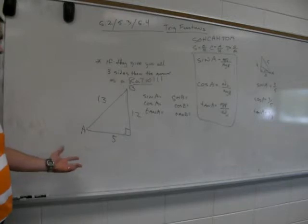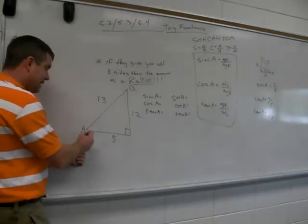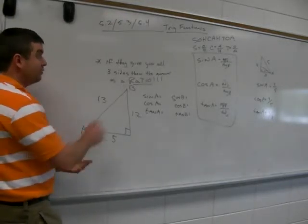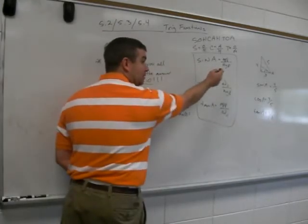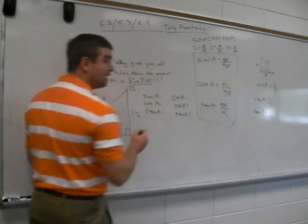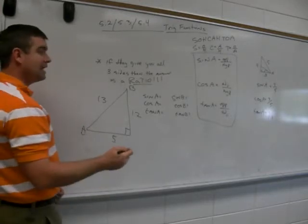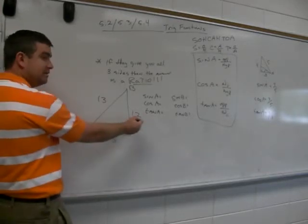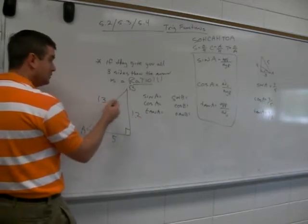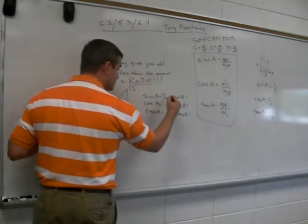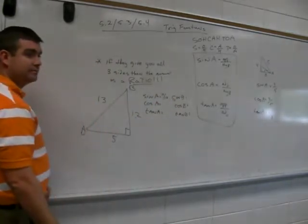What is the sine of angle A? Well, sine equals what? Opposite over hypotenuse. You don't know it today, but by tomorrow you need to know. Sine is opposite over hypotenuse. So there's opposite. There's hypotenuse. So the answer is 12 over 13.